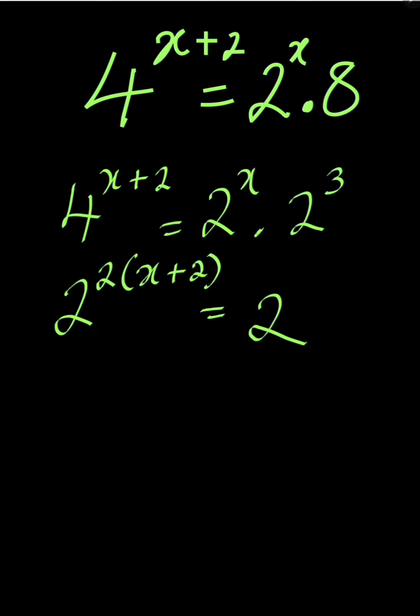And remember the laws of indices that if the bases are the same, you are free to add the powers when you are multiplying. So we can have it 2 power x plus 3. Then 2 times x is 2x and 2 times 2 is 4. Everything is equal to 2 to the power of x plus 3.